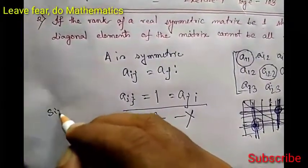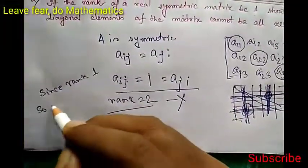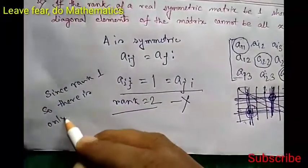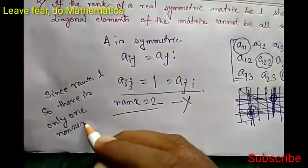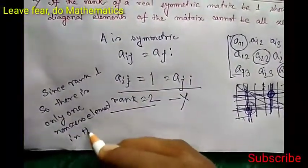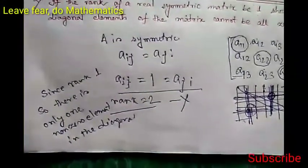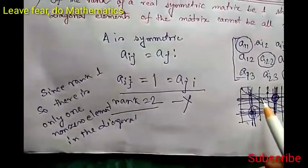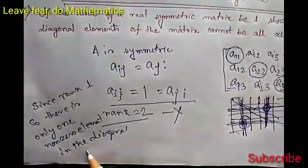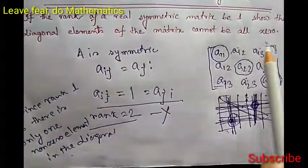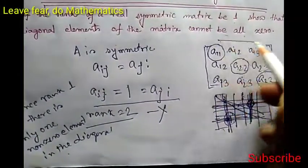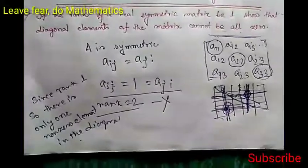So to make the rank equal to 1, the nonzero element should be on the diagonal. This implies the nonzero element must lie on the diagonal. There is only one nonzero element on the main diagonal, because if more than one nonzero element exists on the diagonal the rank may again be greater than one. One nonzero diagonal element means all the diagonal elements cannot be zero — at least one element is nonzero. That completes the proof.